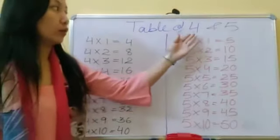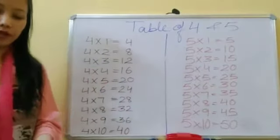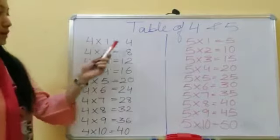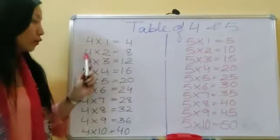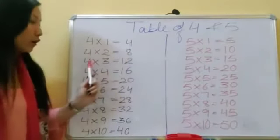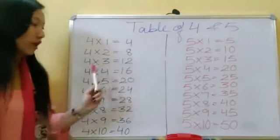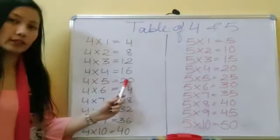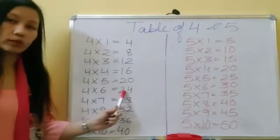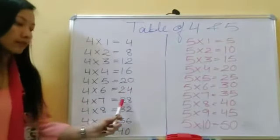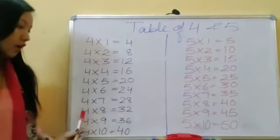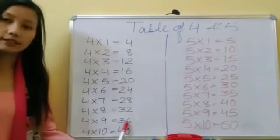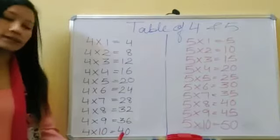Table of four: four ones are four, four twos are eight, four threes are twelve, four fours are sixteen, four fives are twenty, four sixes are twenty-four, four sevens are twenty-eight, four eights are thirty-two, four nines are thirty-six, four tens are forty.